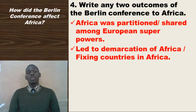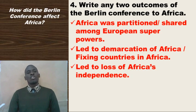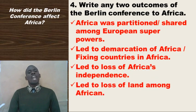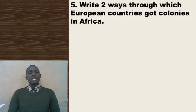Further effects of the Berlin Conference include: it led to loss of Africa's independence — independence meaning total freedom from external influence or colonial rule. It also led to loss of land among Africans, and tribes of the same origin and in the same geographical location were separated.